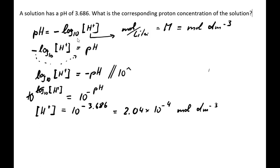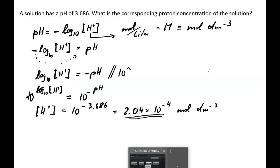So that would be the proton concentration corresponding to a pH of 3.686. I hope this makes sense — thank you very much for watching.